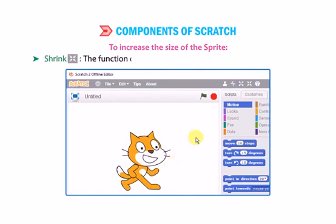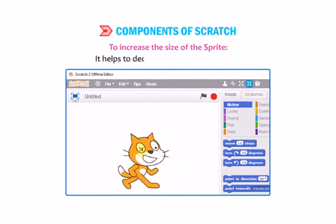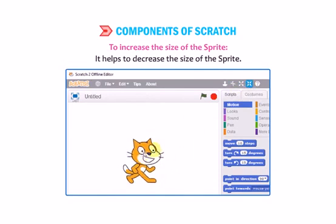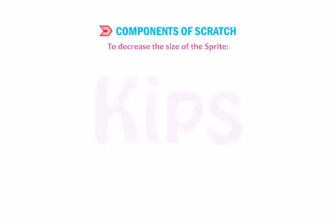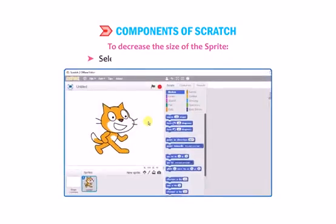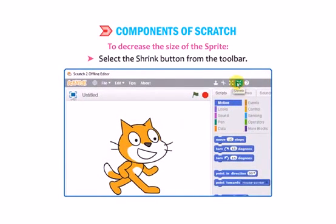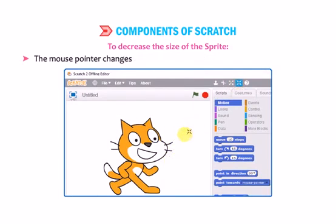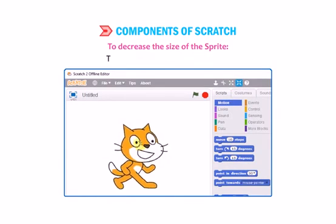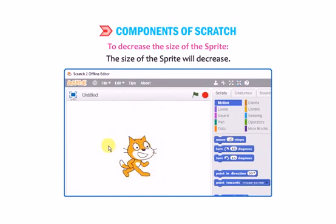Shrink works opposite to the Grow button — it decreases the size of the sprite. To shrink a sprite, select the Shrink button from the toolbar. The mouse pointer changes to a four-headed arrow pointing inward. Place the pointer on the sprite and click on it. The size of the sprite will decrease.